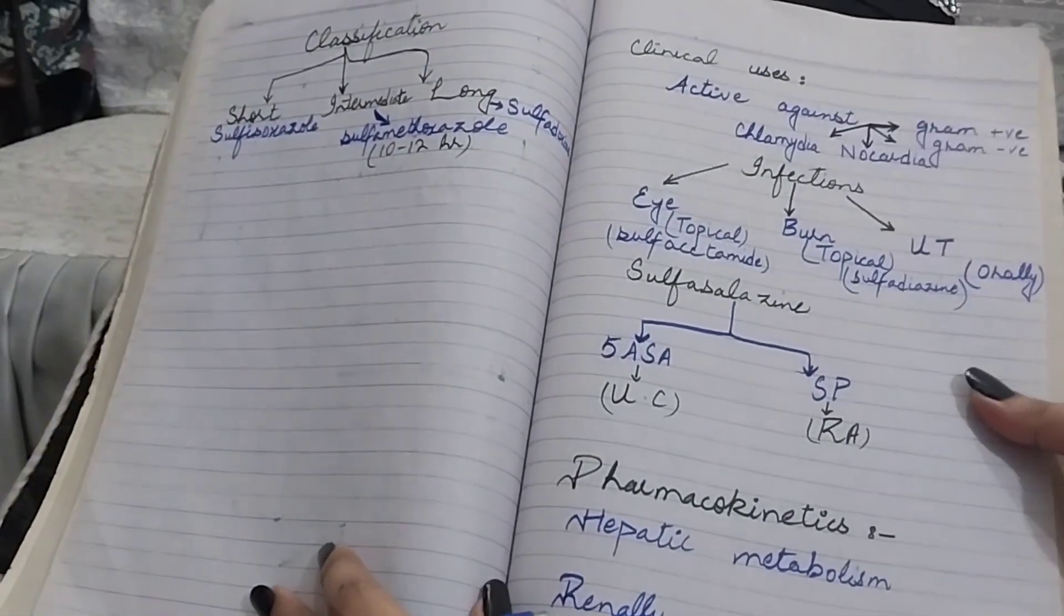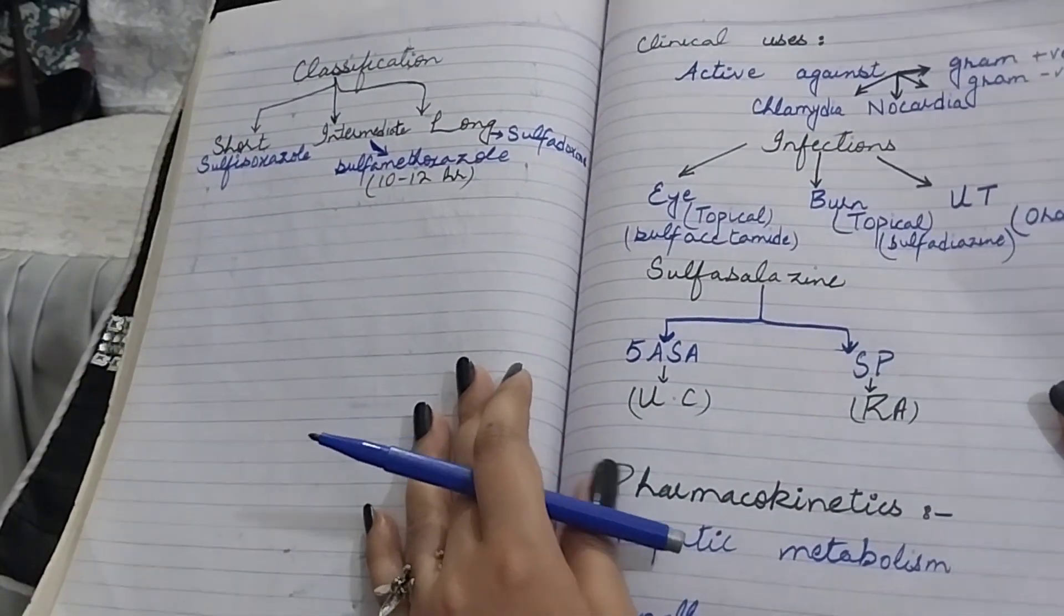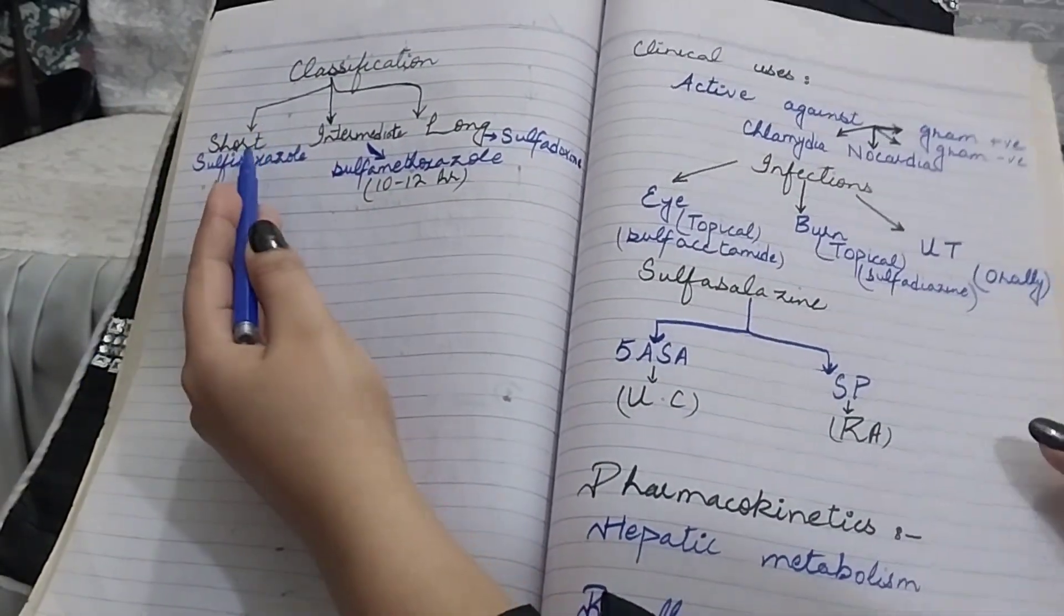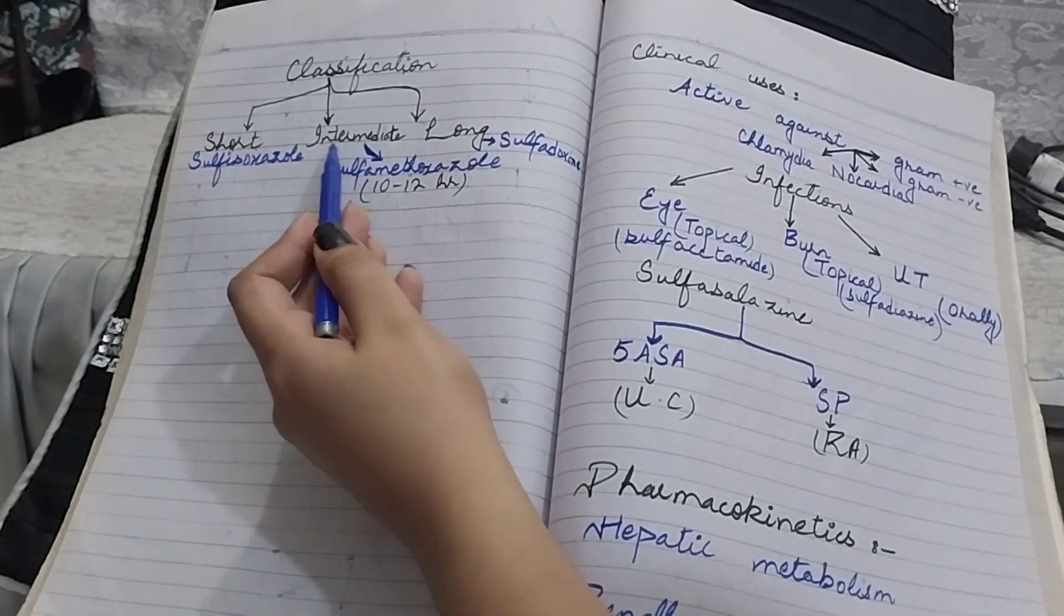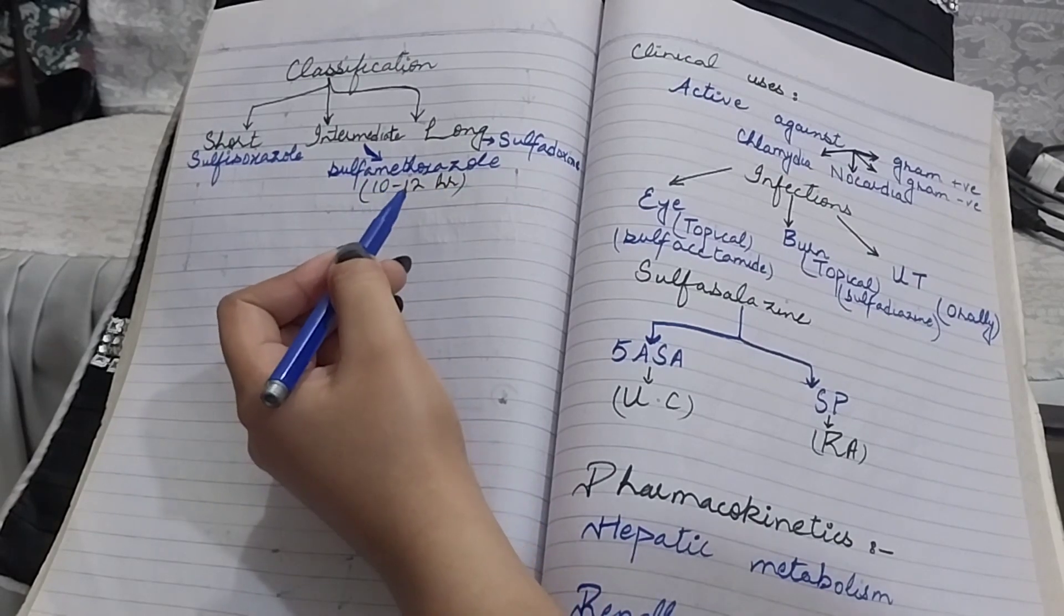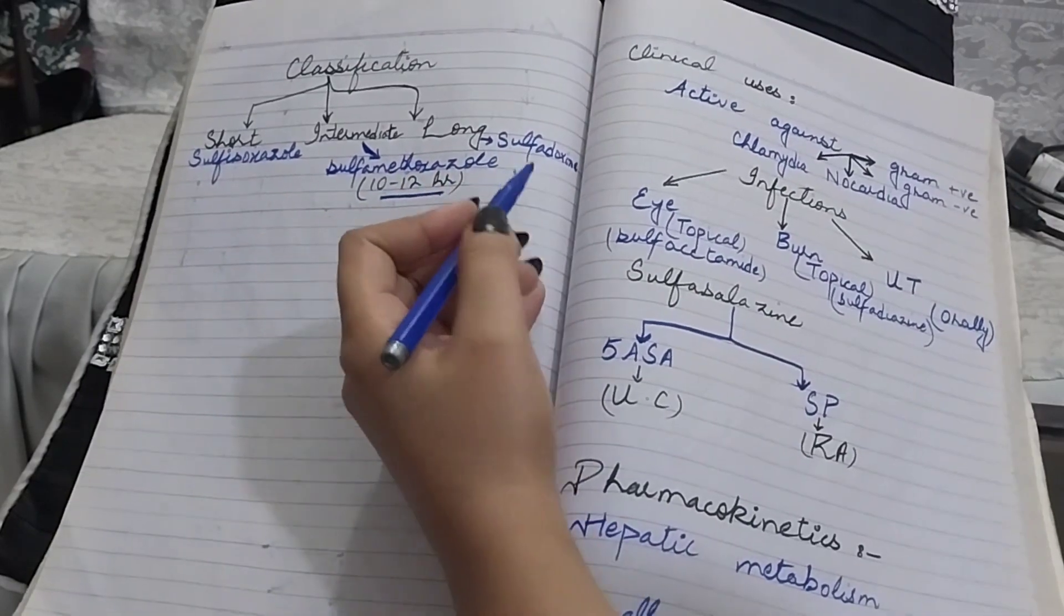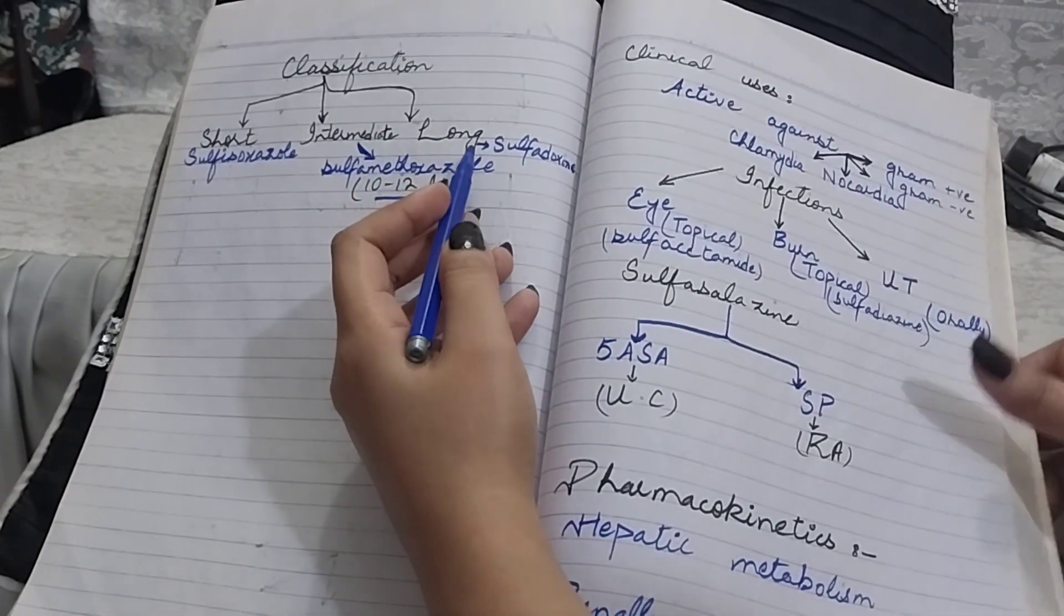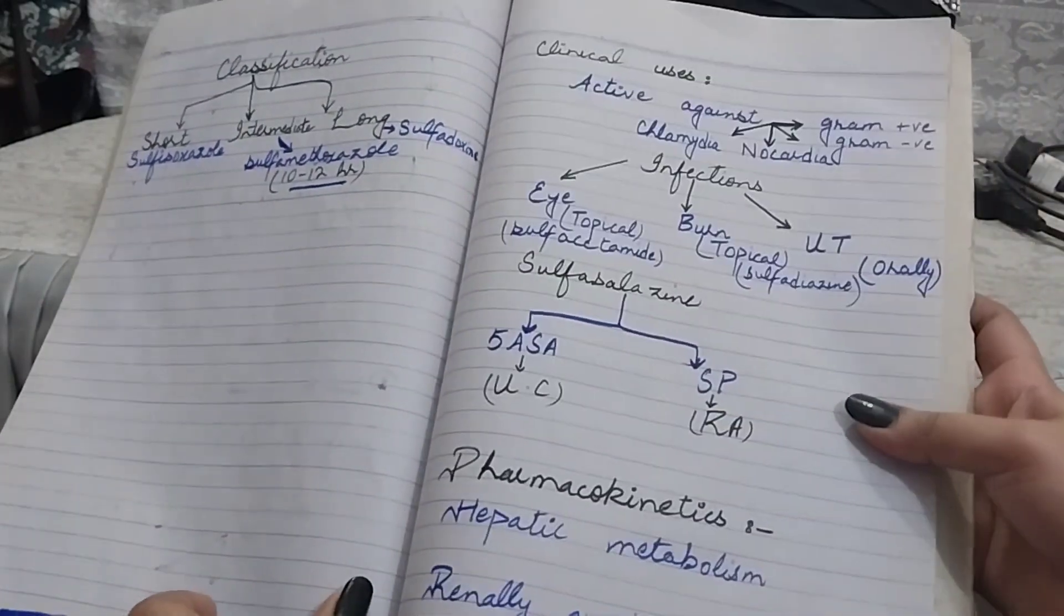We can classify sulfonamides into three categories: short-acting like sulfisoxazole, intermediate-acting like sulfamethoxazole that has a half-life of 10 to 12 hours, and long-acting sulfonamides like sulfadoxine.